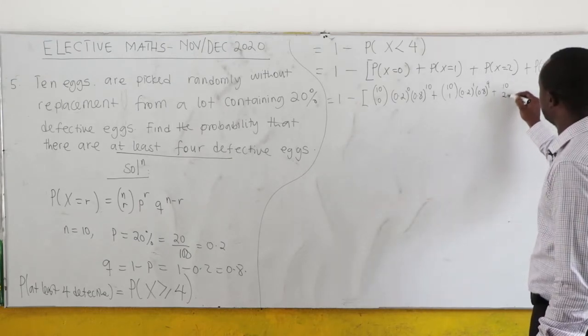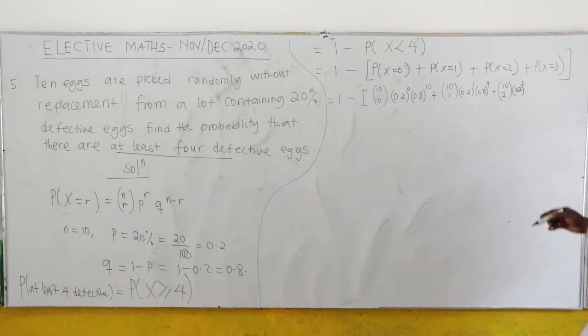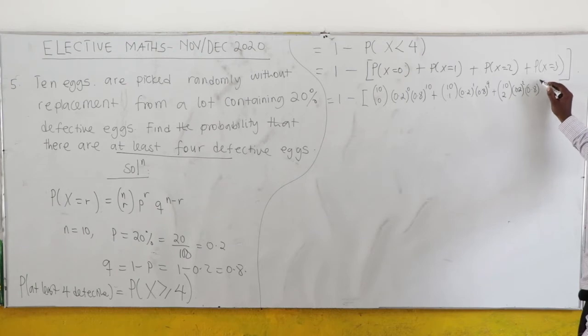Now when it's 2, 10C2, 0.2^2, and then 0.8^8. Why 8? Because 10 minus 2 is giving us 8.